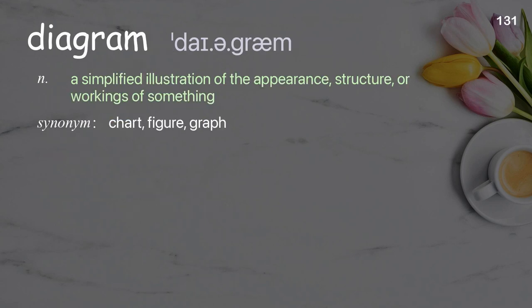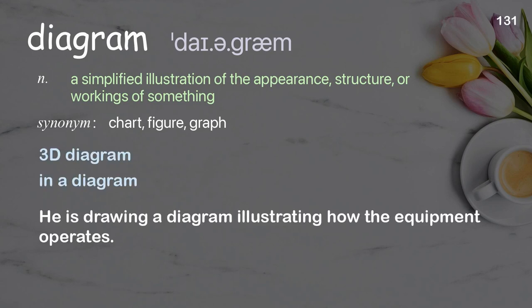Diagram. A simplified illustration of the appearance, structure, or workings of something. Examples: 3D diagram, in a diagram. He is drawing a diagram illustrating how the equipment operates.